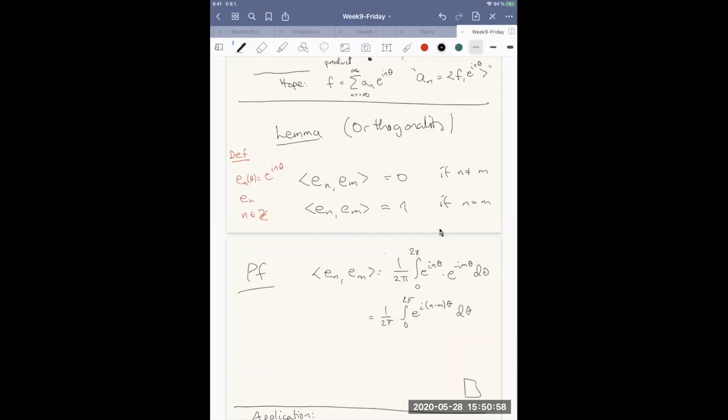Now there are two cases. If n is equal to m, then what we have is the exponent is equal to 0. And when the exponent is equal to 0, e to the 0 is equal to 1. So we have integral of 1, and we get 1. And this is the point where we put the 1 over 2 pi. Because the length of the interval is 2 pi, so we want this integral to be 1. And that way we obtain that by normalizing the integral by 2 pi.